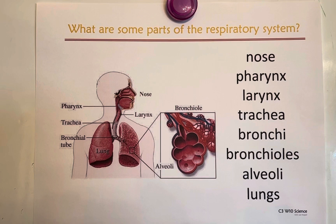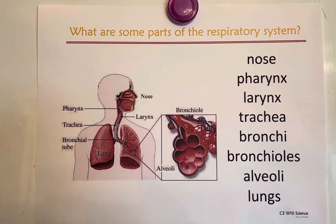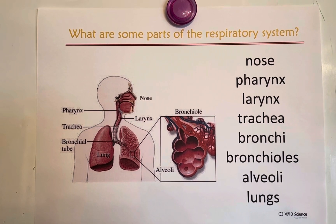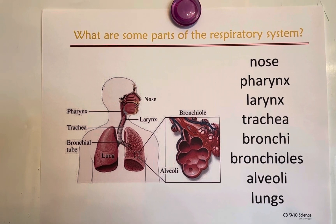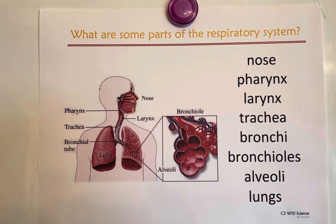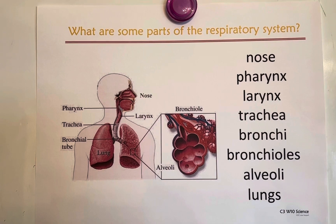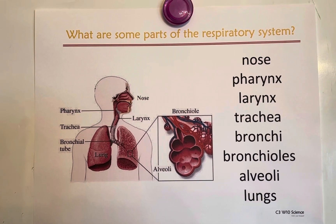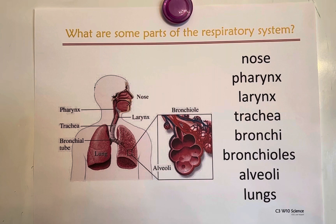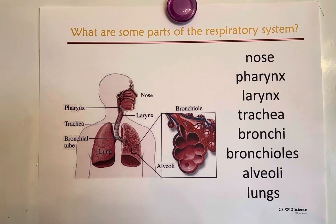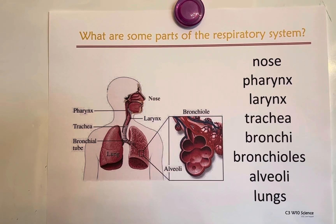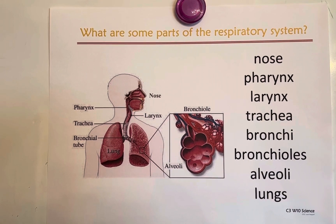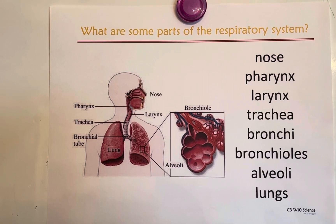What are some parts of the respiratory system? Some parts of the respiratory system are nose, pharynx, larynx, trachea, bronchi, bronchioles, alveoli, and lungs.